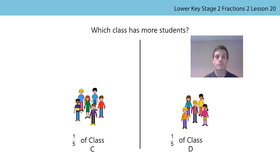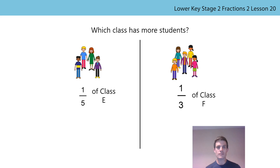Let's also look at this problem that we've seen before. What's the same and what's different? The same is the part — in both classes it's a fifth, so in both classes the whole is going to be five times bigger. But what's different? The number of students in each part is different. Now let's look at this next problem. The same is that both classes have students, but the number of students in each class is not the same, and the fraction of the whole is not the same. So this problem is different from what we've seen before.